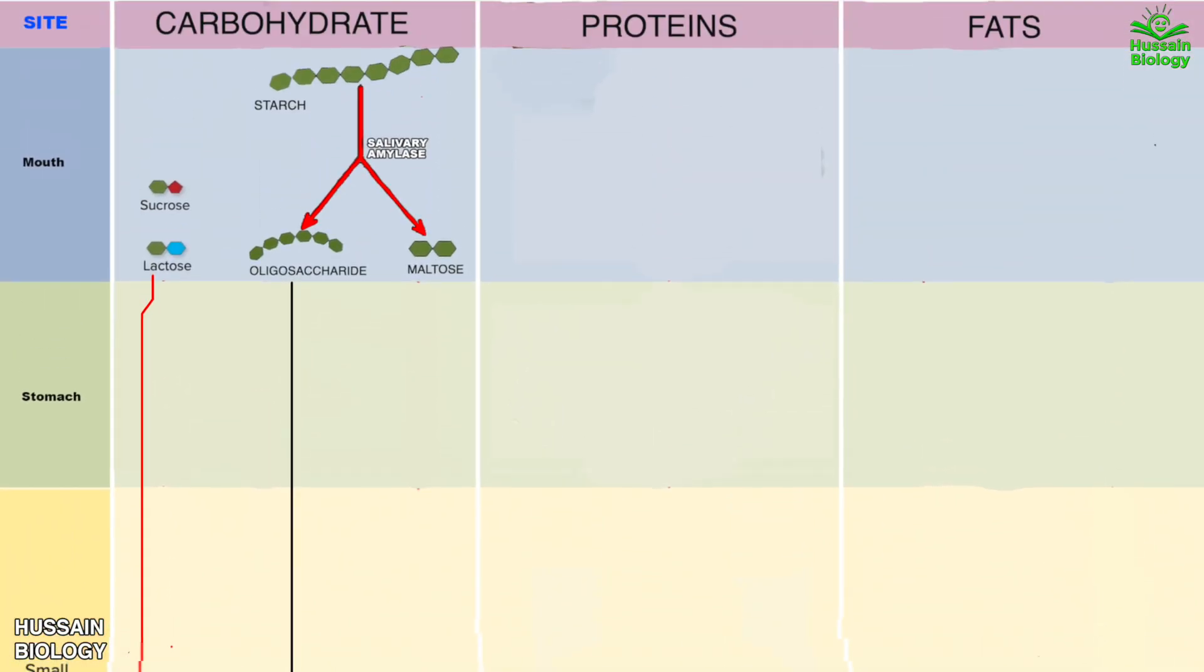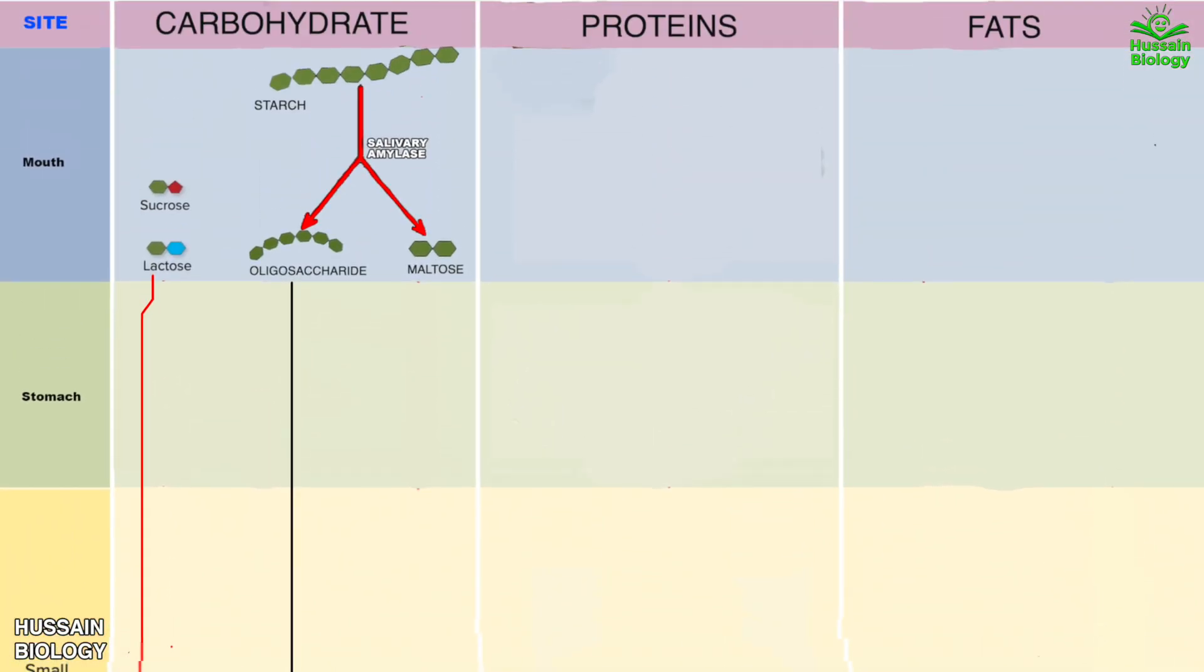Now getting to the proteins. Here in this diagram we have the proteins in the mouth where we do not get any kind of transformation. These proteins reach the stomach and are acted upon by pepsin enzyme. This pepsin enzyme converts it into small peptides in the stomach as shown in the animation.